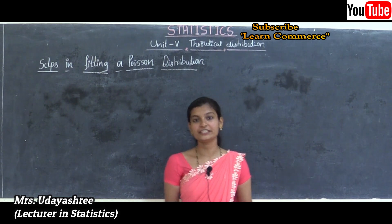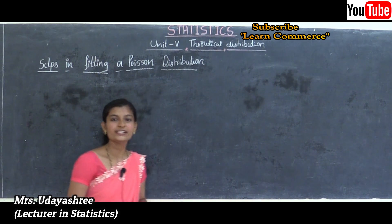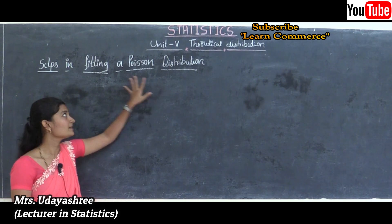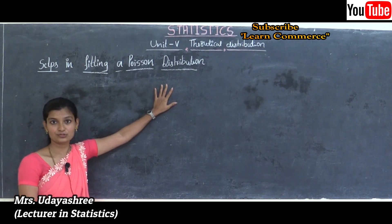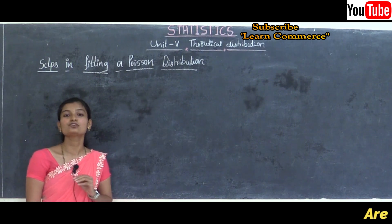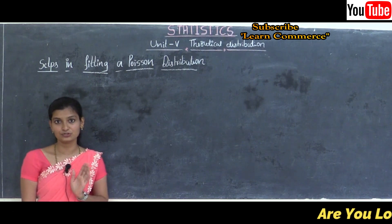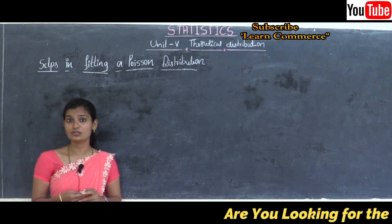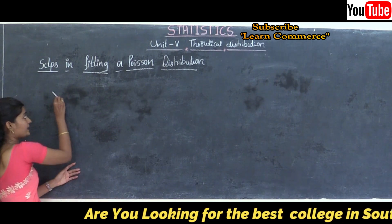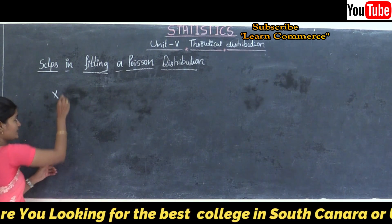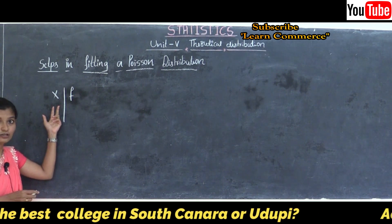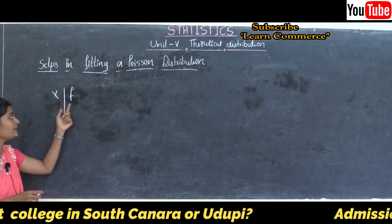What is the meaning of fitting a Poisson distribution? The meaning of fitting a Poisson distribution is to fit a Poisson distribution to an observed frequency distribution. We know the format of observed frequency distribution: the value of the variable X along with its frequency F.